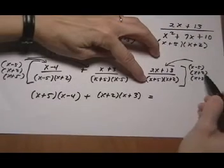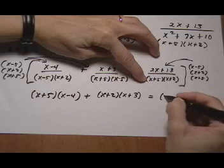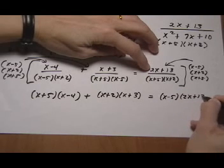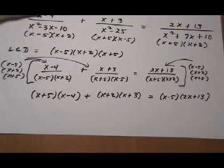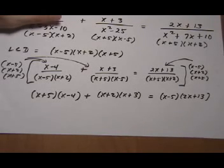x plus 5 cancels out and the x plus 2 cancels out. We're left with x minus 5 and the numerator. And now we have a new equation with absolutely no denominators, which is exactly what we want.